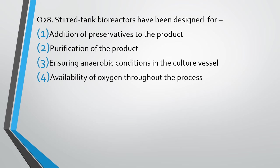The correct answer is option 4 — availability of oxygen throughout the process. The stirred tank bioreactor has a stirrer which rotates and mixes all the material in the bioreactor. When the materials are rotated, there is good mixing of oxygen so that oxygen is available to every part of the bioreactor, and organisms growing in different parts are able to get their oxygen source. So stirred tank bioreactors are designed for availability of oxygen throughout the process.